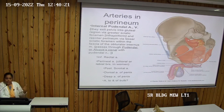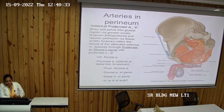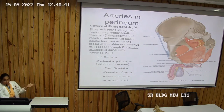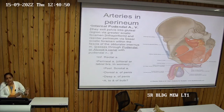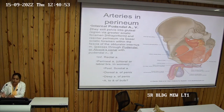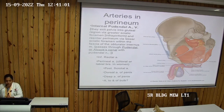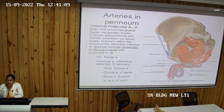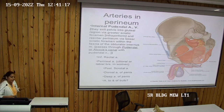The internal pudendal artery follows the same course as the pudendal nerve through the pudendal canal. Its branches include: the inferior rectal artery, the perineal artery, the artery of the bulb of the penis, the deep dorsal artery of the penis, and the deep artery of the penis — all supplying the perineal region. These are all branches of the internal pudendal artery.